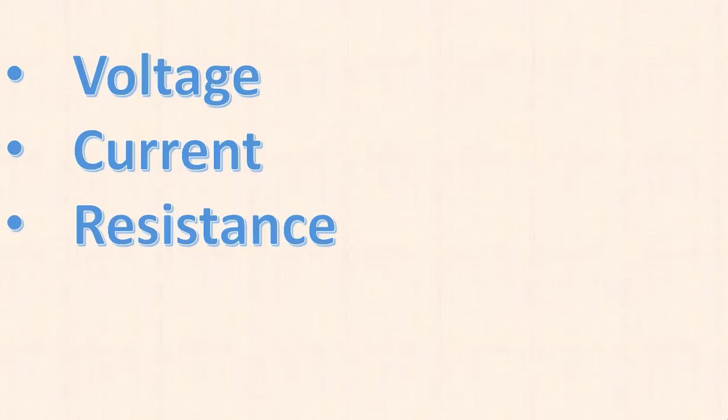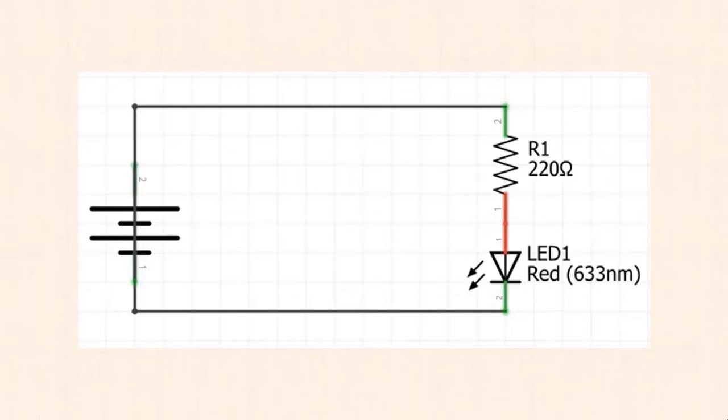So here we are, and let's start by explaining three fundamental concepts in electronics: voltage, current, and resistance. Here we have what's called a series circuit with a battery, an LED, and a resistor. As long as the battery isn't dead, the LED lights up.